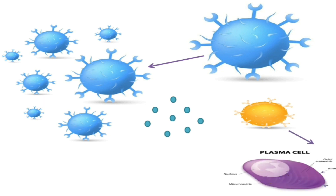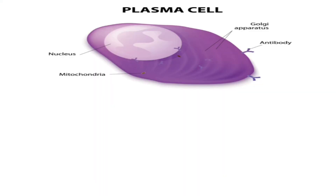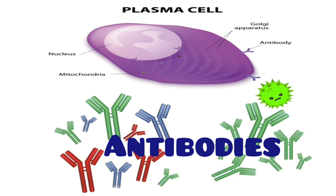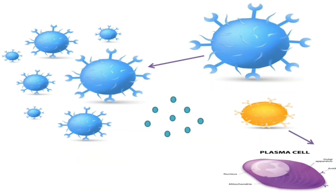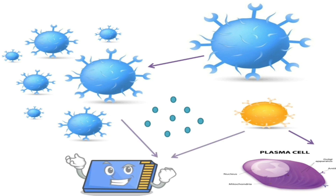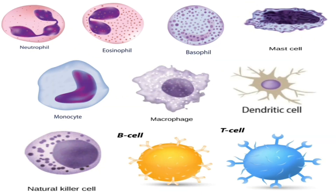B cells convert to their activated form — plasma cells. Plasma cells produce specific antibodies to the pathogen to facilitate the complete elimination process. Not only that, but some B cells and T cells convert into memory cells that remember the pathogen in case it invades again. Clonal expansion and plasma cell formation will be faster the next time, killing the pathogen in a shorter time. That's all we have in this immunity overview lecture — I hope you enjoyed it. Goodbye.